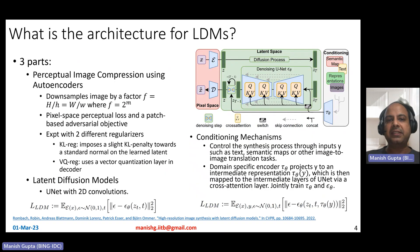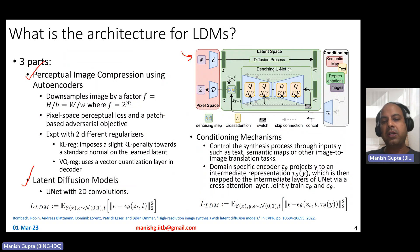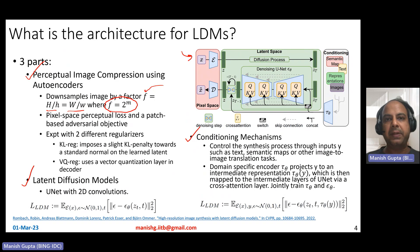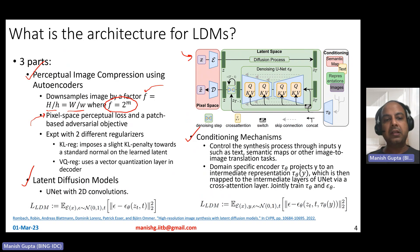Looking into details of the latent diffusion models, there are three parts: perceptual image compression using autoencoders, latent diffusion models, and conditioning mechanisms. The perceptual image compression uses autoencoders and downsamples an image by a factor of f, which means it reduces height by f and width by f. The factor f can be powers of two — they use downsample 2x, 4x, 8x, 16x, and so on. This autoencoder is trained on typical loss functions like pixel-space perceptual loss, L1 and L2 loss at pixel level, and also a patch-based adversarial objective. This local region objective is super important so as to have local realism in the image, besides just learning from L1 and L2 losses.